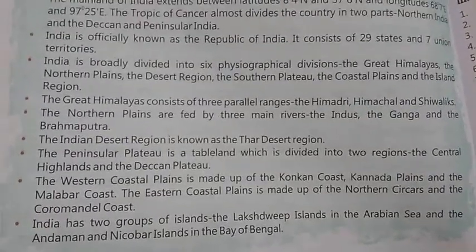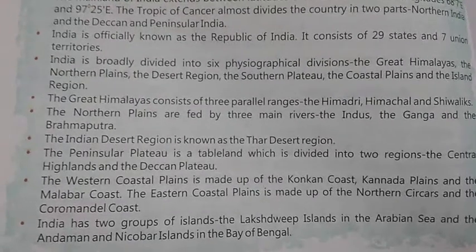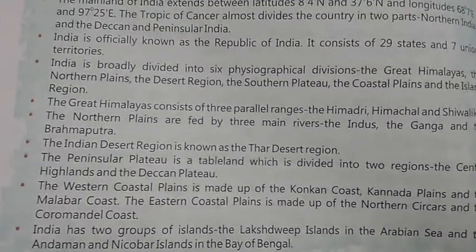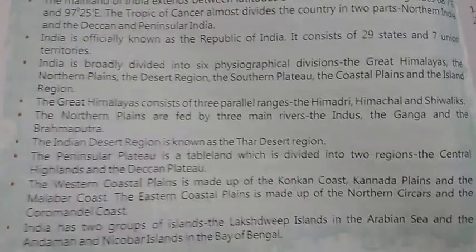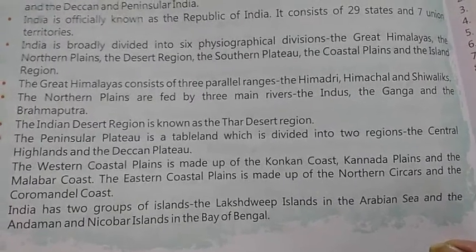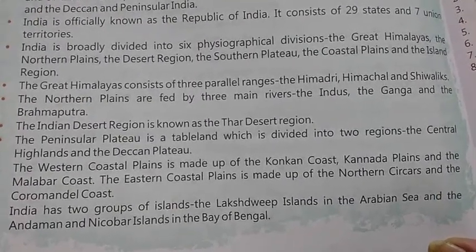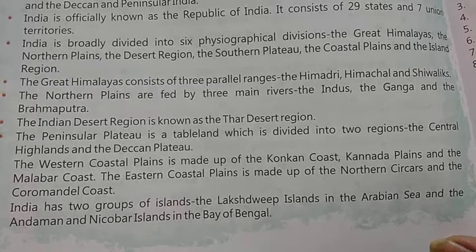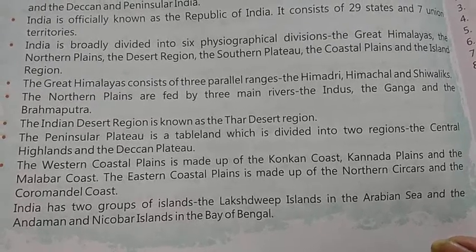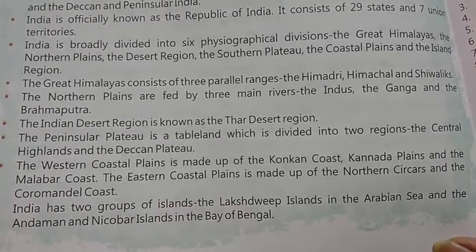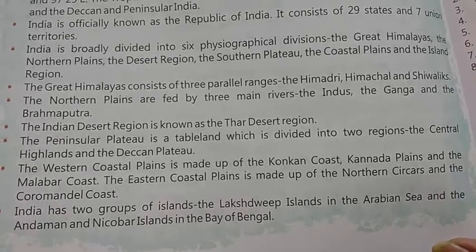India is officially known as the Republic of India. It consists of 29 states and 7 Union Territories. India is broadly divided into six physiographical divisions: the Great Himalayas, the northern plains, the desert region, the southern plateau, the coastal plains, and the island region.